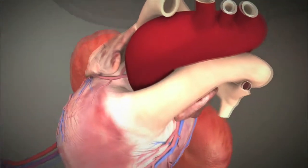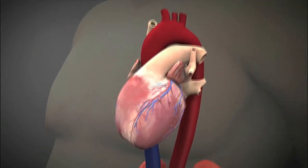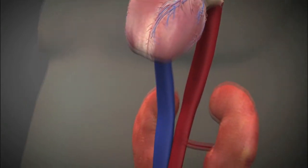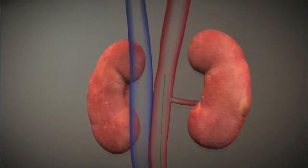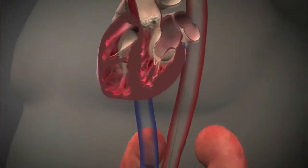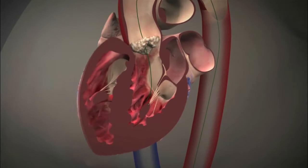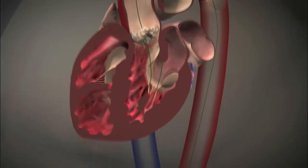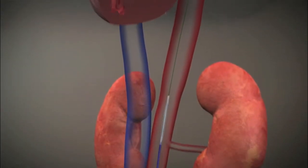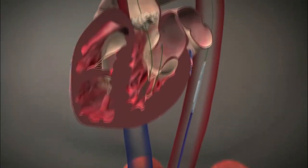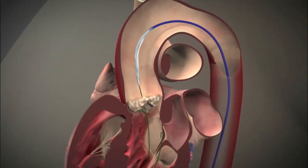To perform the TAVR or transcatheter procedure, a guide wire is inserted in the femoral artery and threaded up through the aorta and around the aortic arch. The wire is then passed through the stenotic aortic valve and into the left ventricle. A balloon catheter is then passed over the wire into the stenotic aortic valve.